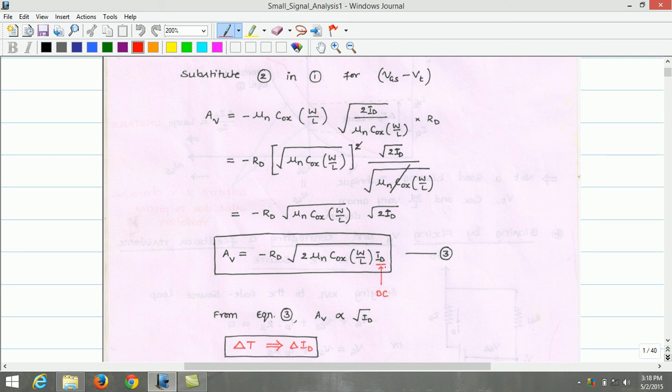From equation 3, it is evident that the voltage gain of an amplifier is proportional to the root of DC drain current.